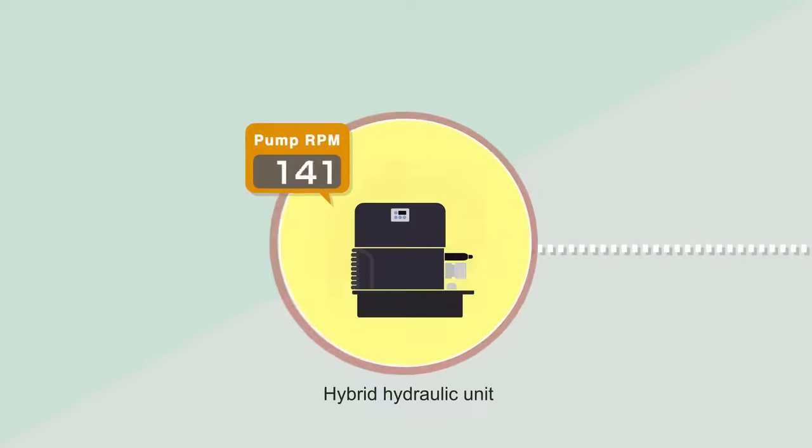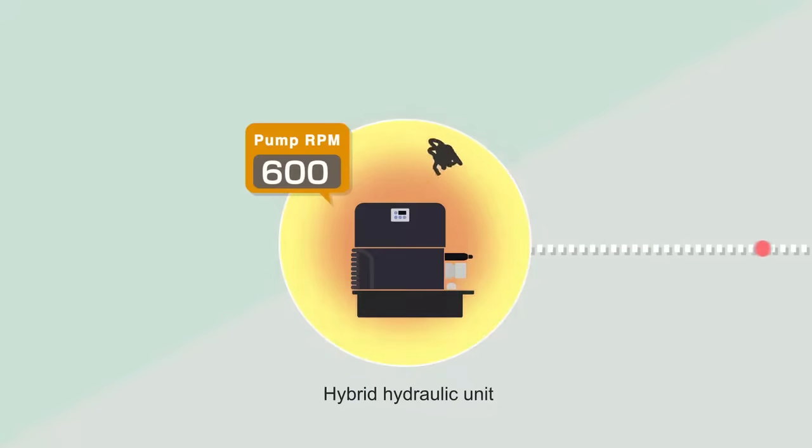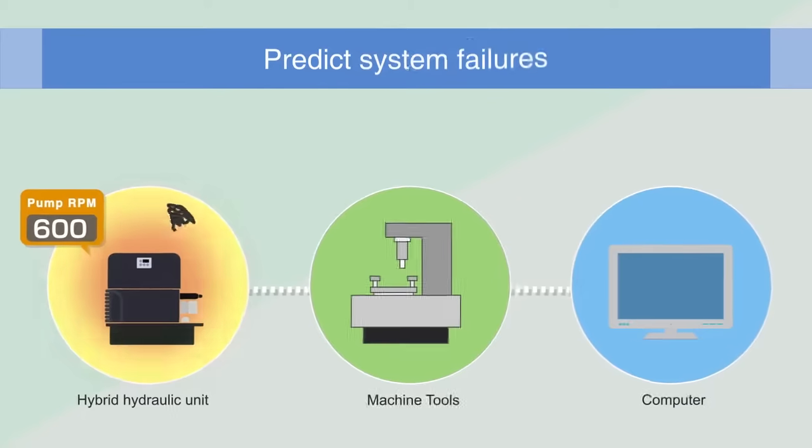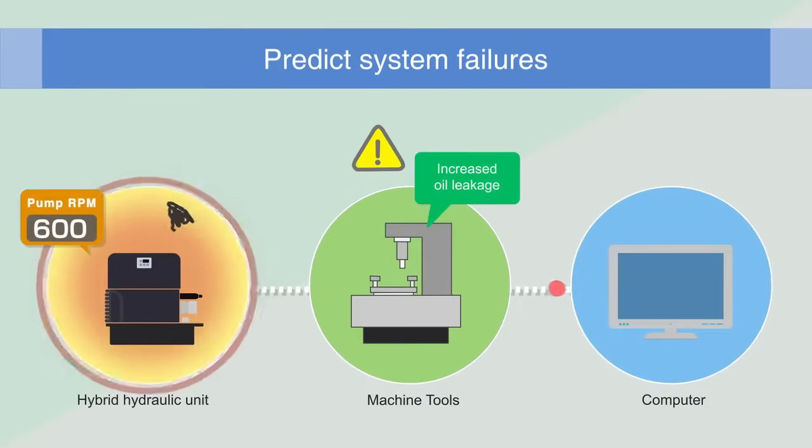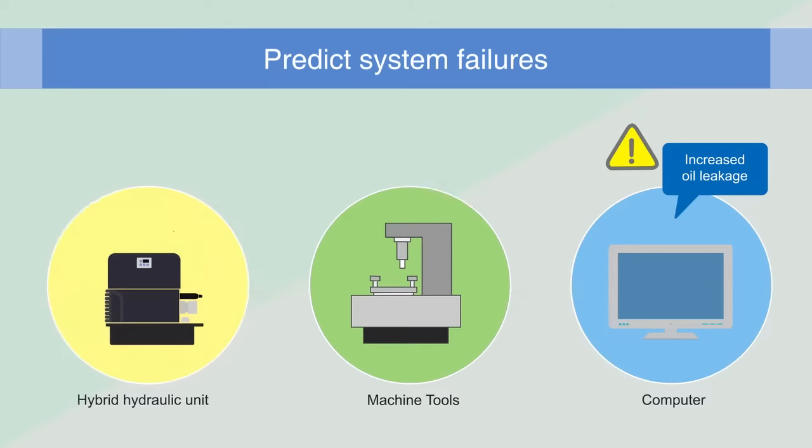Because the hybrid system's operation data is always being monitored, it's much easier to predict system failures. If a system failure is about to occur, you are immediately notified of a possible breakdown based on operating data sent to your computer.